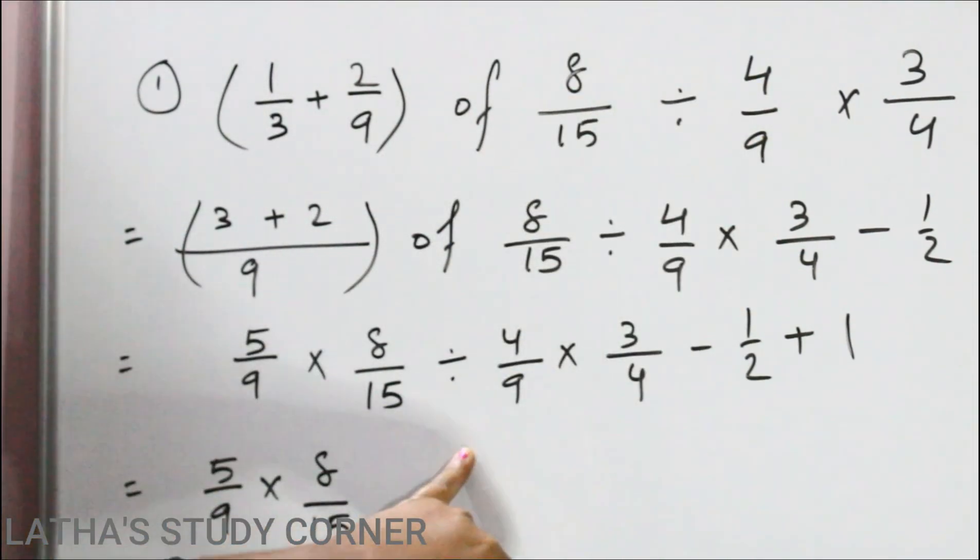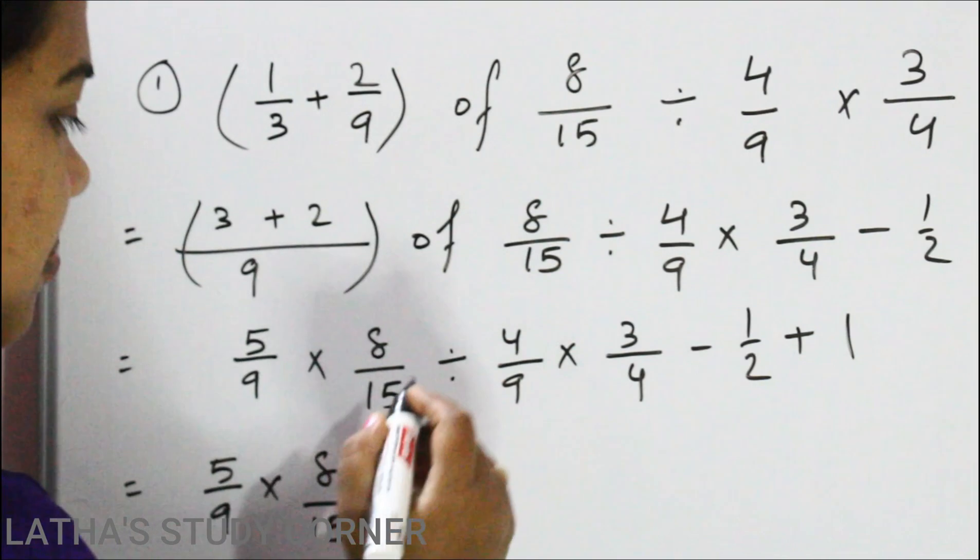Now next is what? Division. Here divided by 4 by 9. So we already know whenever we will divide any number or fraction with a fraction, then in place of division,